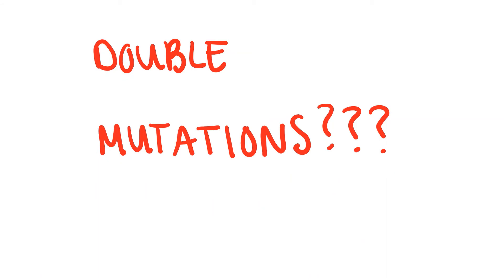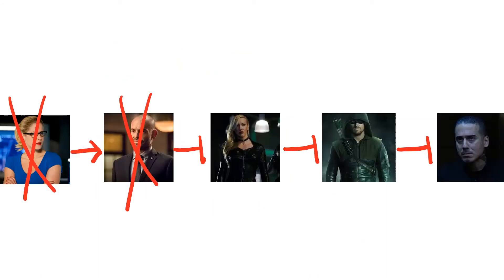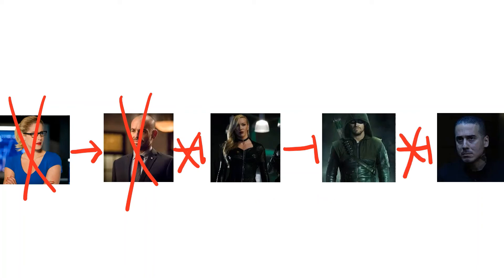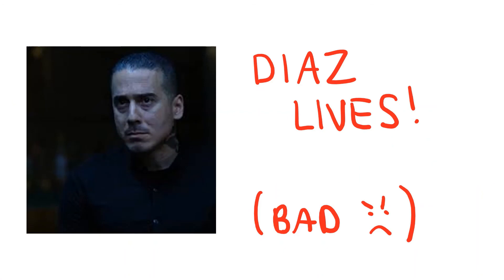All of the previous examples were related to single mutations, but what would happen if there were double mutations? If both Felicity and Quentin were gone, this would be similar to if just Quentin was gone, given that he is more downstream. Quentin would not inhibit Laurel, Laurel then would inhibit Oliver, and Oliver would not be able to inhibit Diaz, so Diaz lives once again.